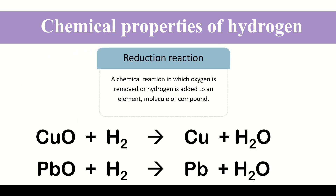For example, when copper oxide is heated at a high temperature and hydrogen gas is passed over it, it gives us pure copper metal and water. Similarly, lead oxide, when it reacts with hydrogen, gives us pure lead metal and water.